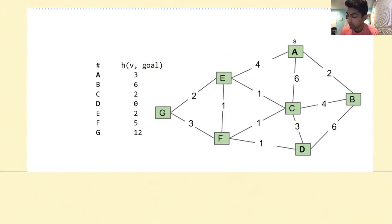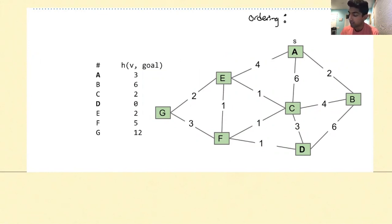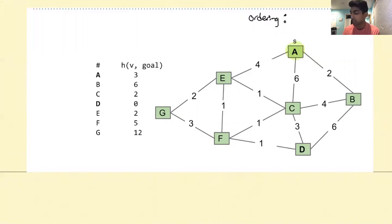Let's keep track of the ordering of the vertices we're visiting, and I'm going to highlight the edges in the shortest paths tree. The first vertex we visit is A because that's the starting vertex. After going to A, how Dijkstra's works is we want to choose the next closest vertex to visit — and that's B.